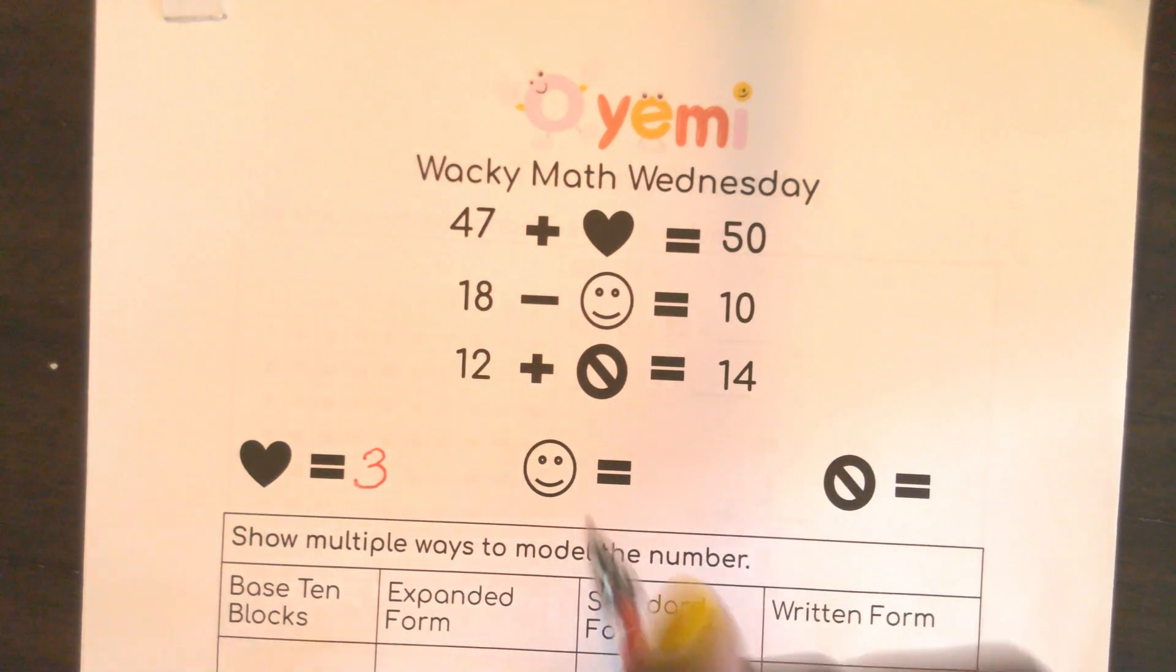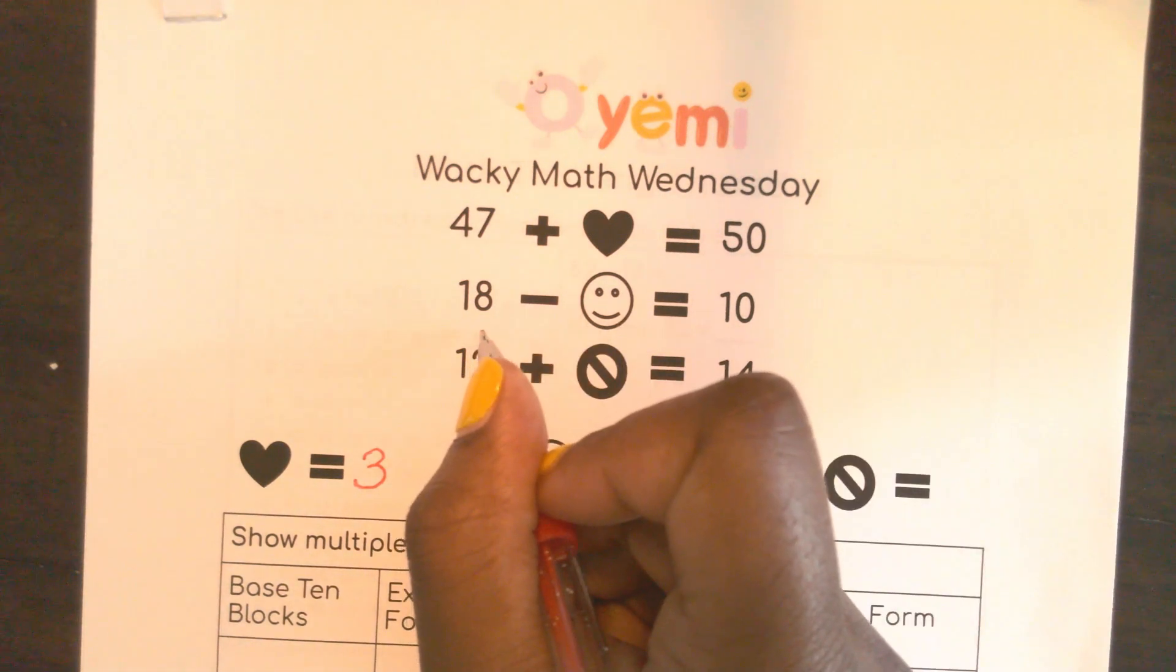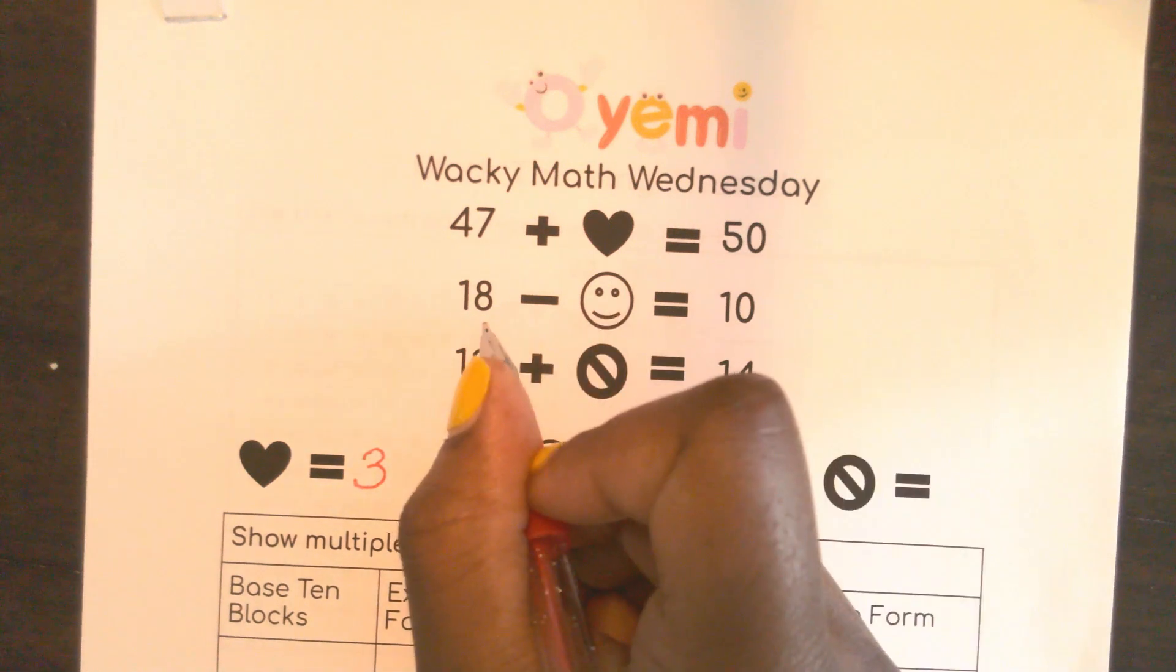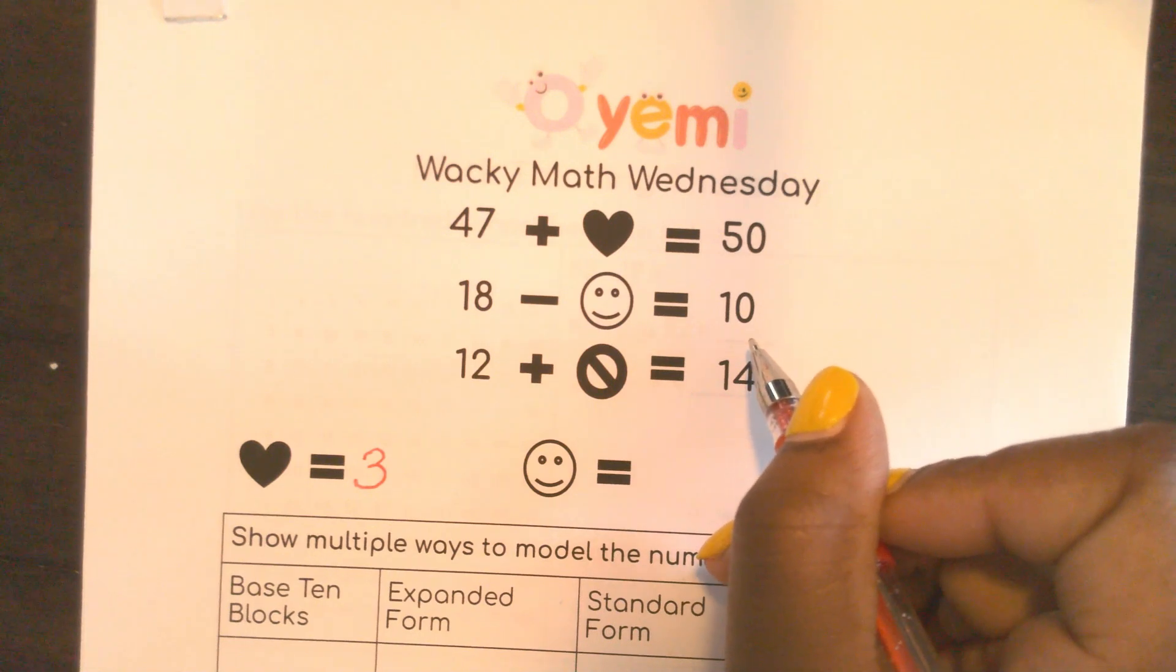Now when I look at my smiley face, here I have 18. What would I subtract to get this number back down to 10? So 18 is a teen number.